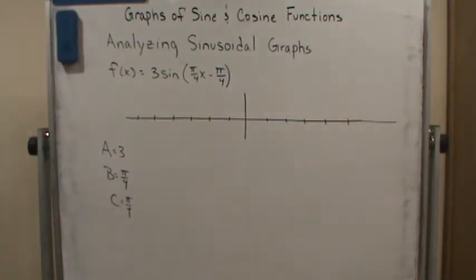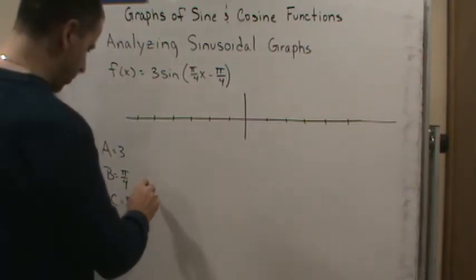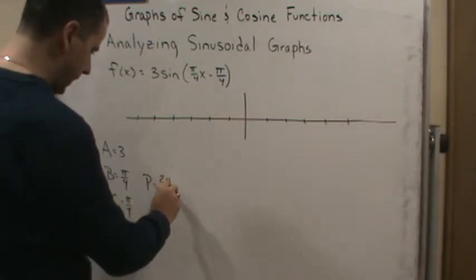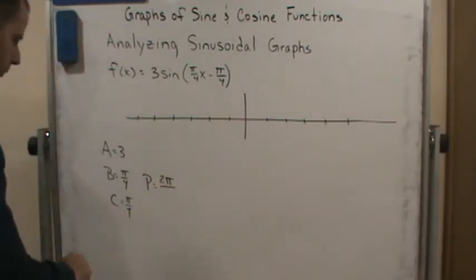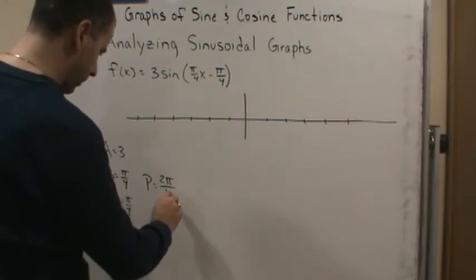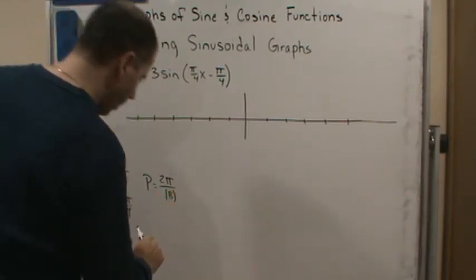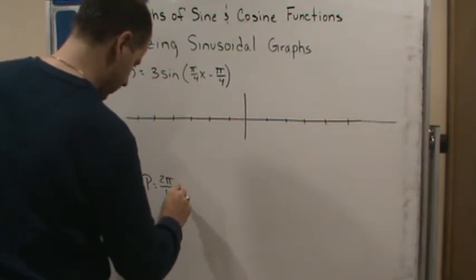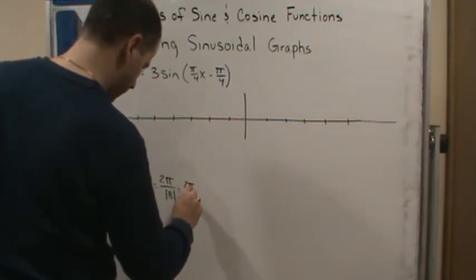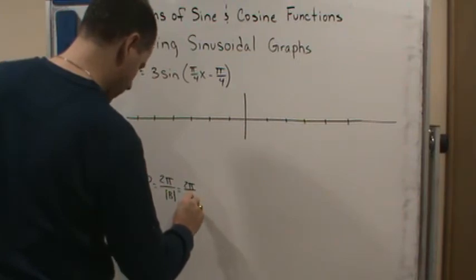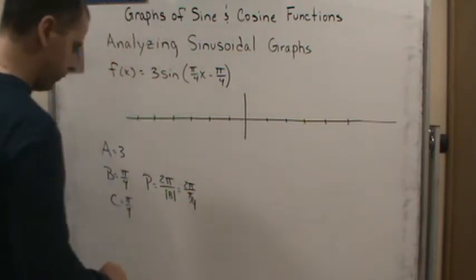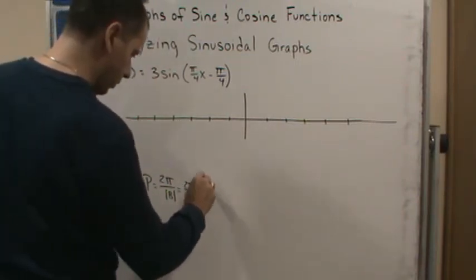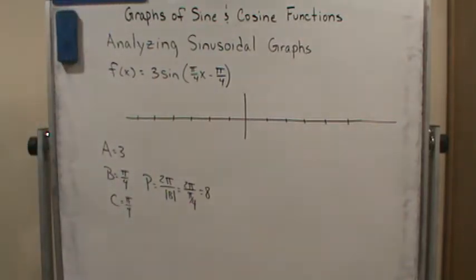And so, well, let's pick out some other things. So we know that the period is 2 pi over the absolute value of B, which equals 2 pi over pi over 4, which equals 8.